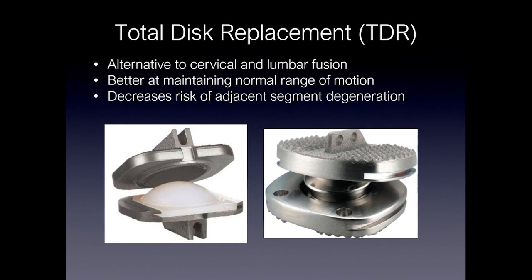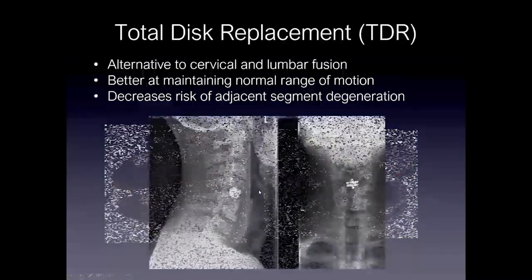Of note, we should talk about total disc replacement. You'll see these on imaging occasionally — this is an alternative to cervical and lumbar fusion. It's better at maintaining the normal range of motion because it mimics the disc. It has also been shown to decrease risk of adjacent segment degeneration, which we'll talk about in the complications portion of this talk.